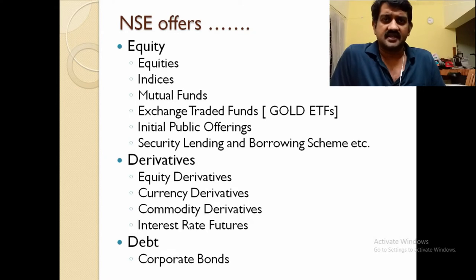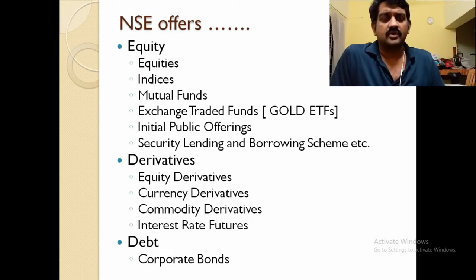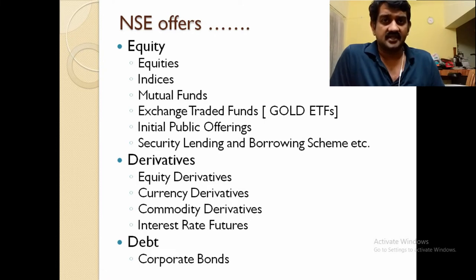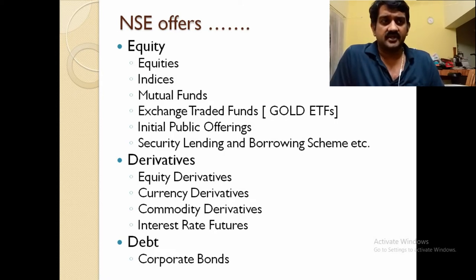Next is security lending and borrowing schemes. Under derivatives, equity derivatives include futures, options, and deliverables. Currency derivatives consist of combinations of different currencies — Rupee-USD, Rupee-GBP, Rupee-Euro, and more. Note that trading international currency pairs like USD-Euro is not allowed in India; it is illegal.